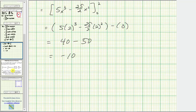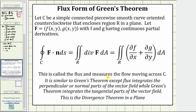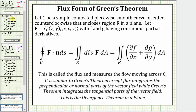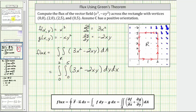Remember, the flux measures the flow moving across the curve C. Going back to our graph, because the flux is negative, this indicates the overall flow across the curve C is inward toward the region R, not outward. If the flux was positive, that means the overall flow would be outward across the curve C away from the region R.